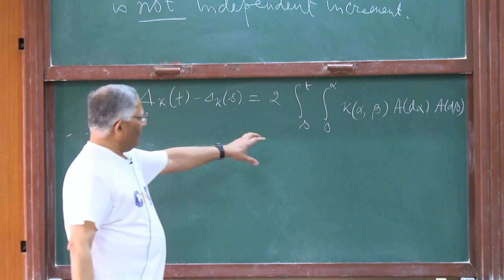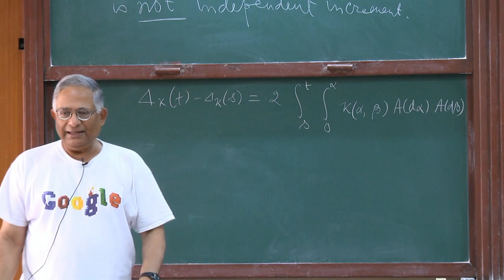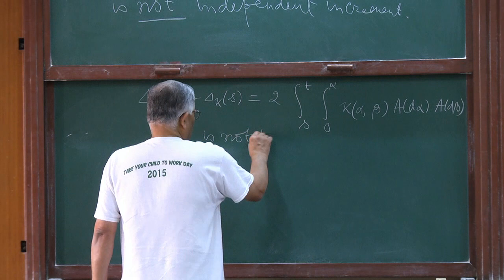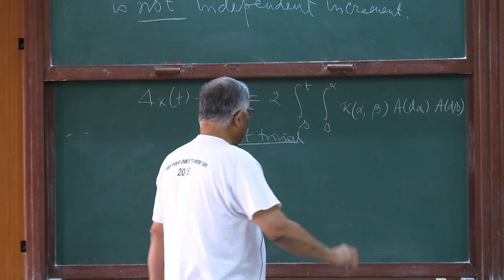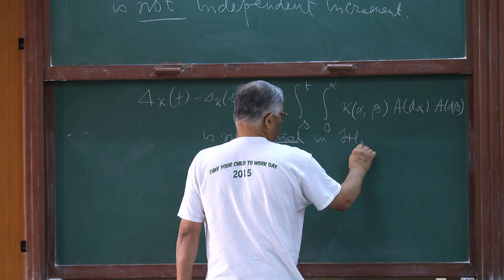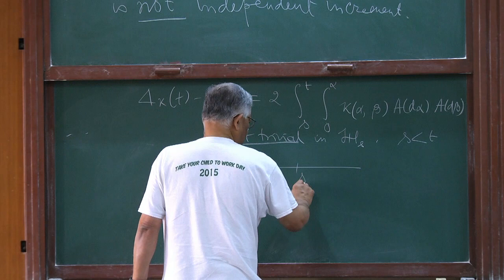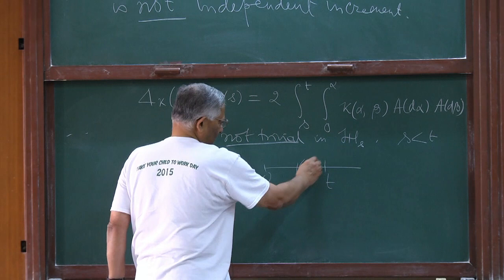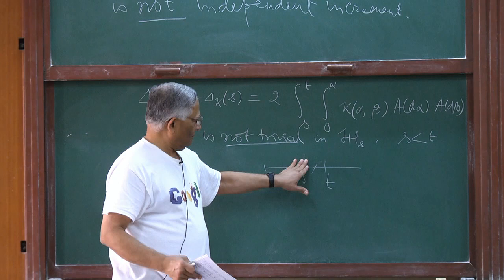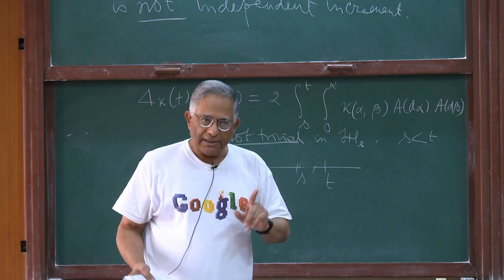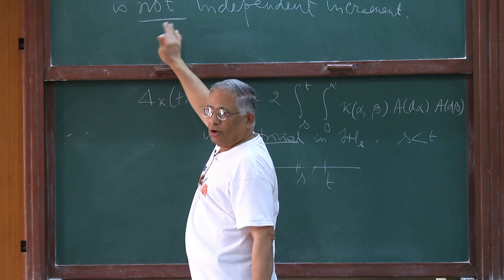If you take the increment δ_κ(t) minus δ_κ(s), you see you cannot make it live only in the sector s to t — it carries all the information from 0 to t. So the increment is not trivial in H_{[0,s]} for s less than t. The original three processes a, a†, λ were trivial in H_{[0,s]} and H_{beyond t}, but this one is not trivial in H_{[0,s]}. It is still identity in H_{beyond t}, but not identity in H_{[0,s]}. That is expressed by saying it is not of independent increment.